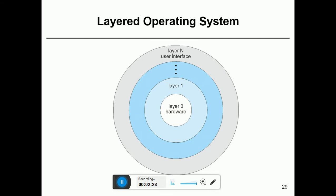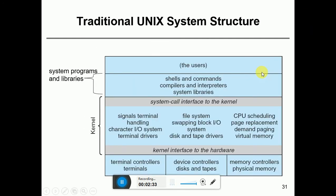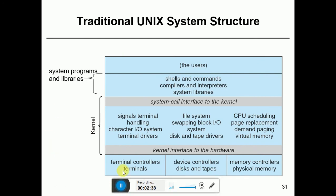Next is Unix. In Unix operating system, it used to be monolithic structure because the kernel has all the functionalities. Here the CPU scheduling, file system, swapping, block - all the functionality has been kept in the kernel.